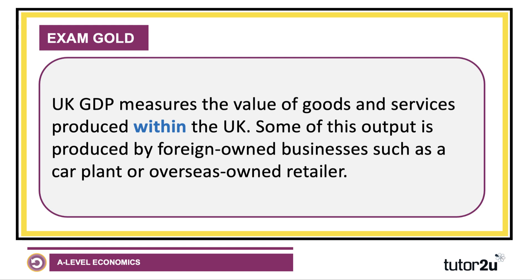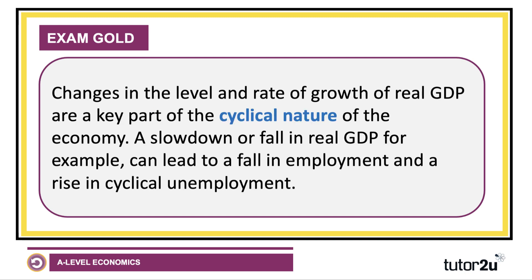Some of this output — indeed a substantial part — is supplied by foreign-owned businesses. This could be a car plant such as Nissan in the Northeast, or perhaps output generated by an overseas retailer, health provider, or gym chain. Keep in mind that in a globalized world, the GDP of a country is often a result of factors of production owned by businesses from across the world.